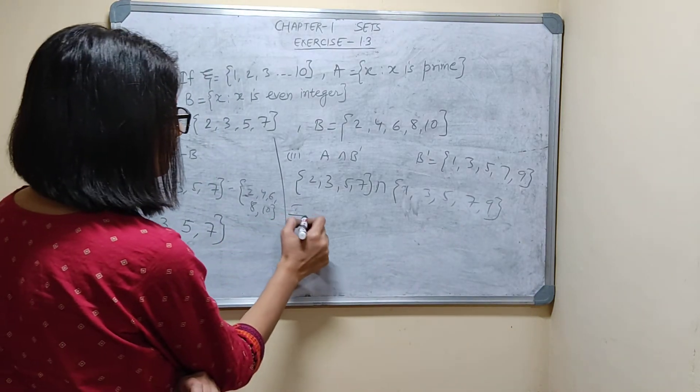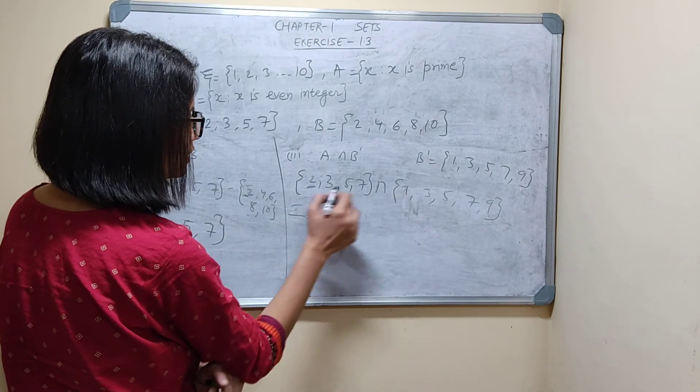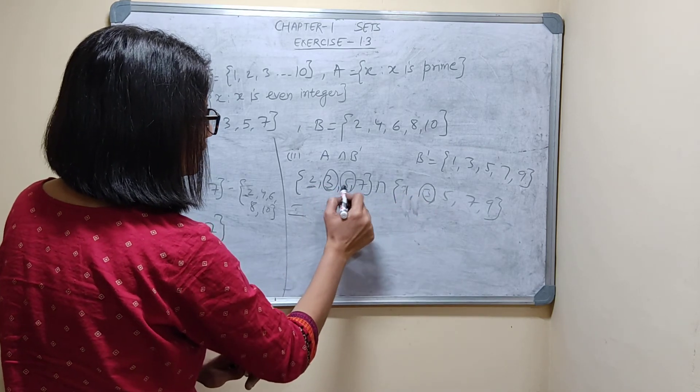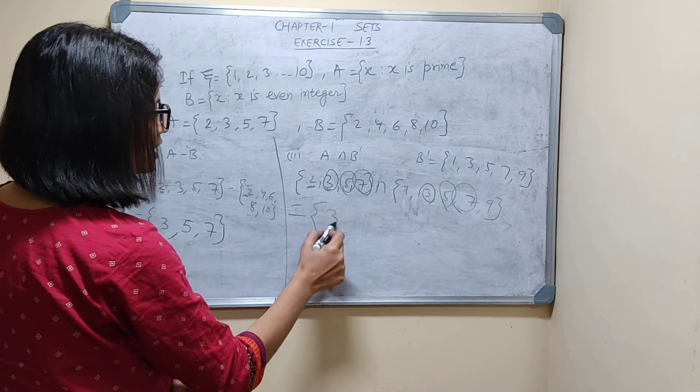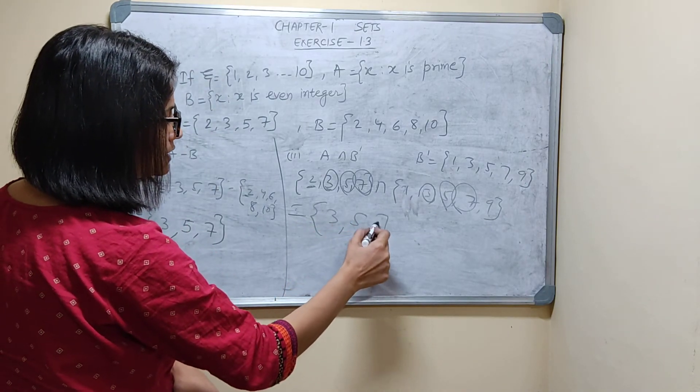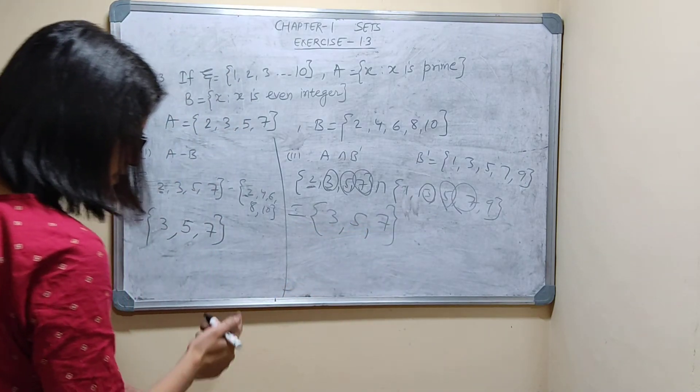What is common between these two? 2, it's not. 3 is here. 3 is here. 5 is here. 5 is here. 7 is here. So the answer is what? 3, 5, 7. This answer.